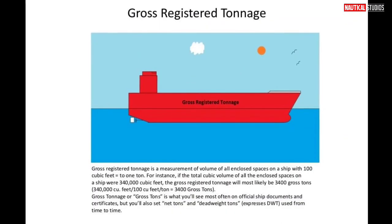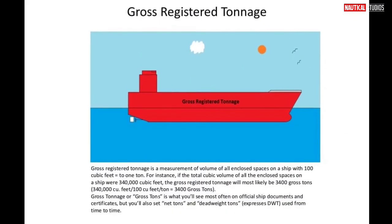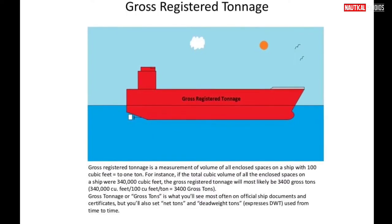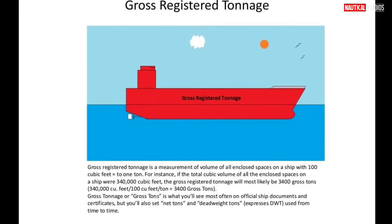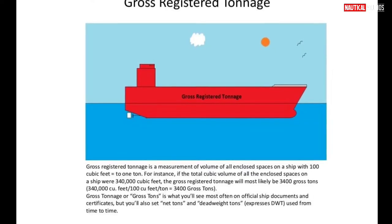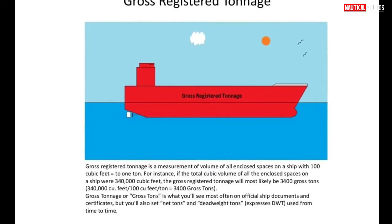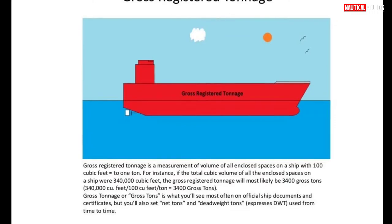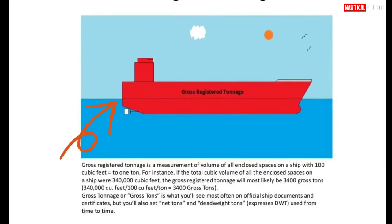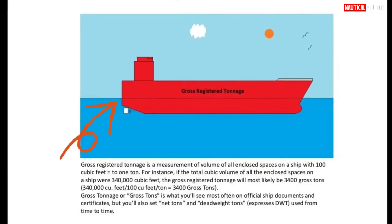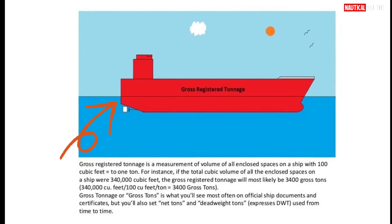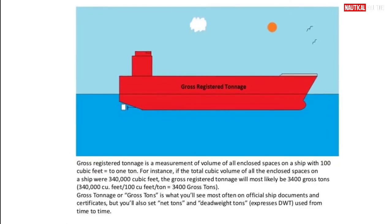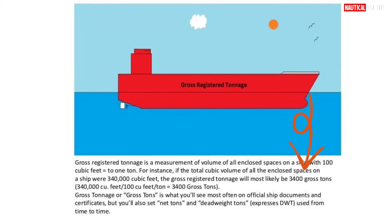Gross registered tonnage is a measurement of volume of all enclosed spaces on a ship, with 100 cubic feet equaling one ton. For instance, if the total cubic volume of all the enclosed spaces on a ship were 340,000 cubic feet, the gross registered tonnage would most likely be 3,400 gross tons.